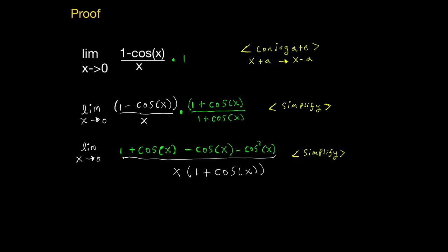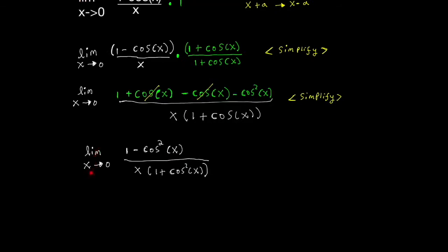I'm going to simplify again, noticing that this positive cosine x can cancel out with this negative cosine x. So these cancel out and all I'm left with is the limit as x approaches 0 of 1 minus cosine squared of x all over x times 1 plus cosine squared of x.